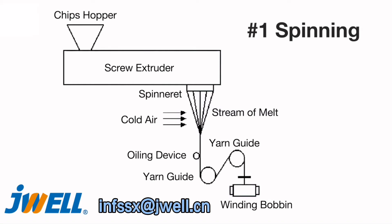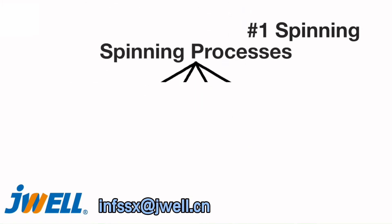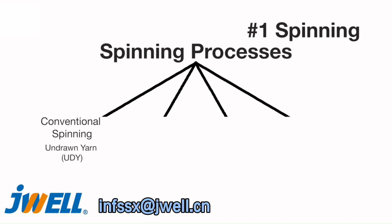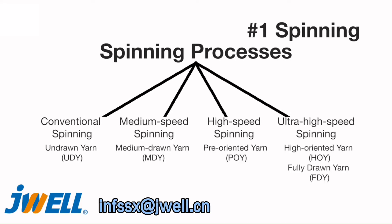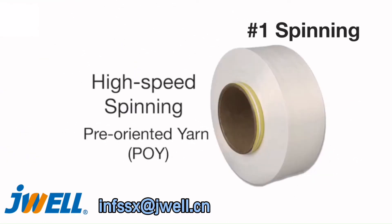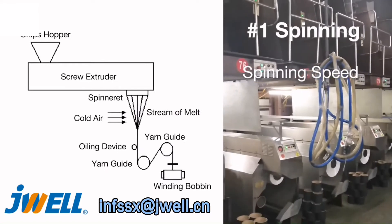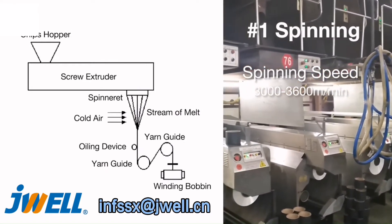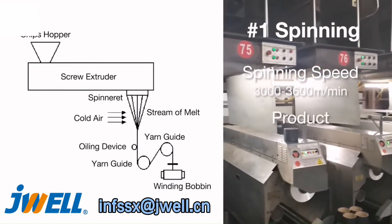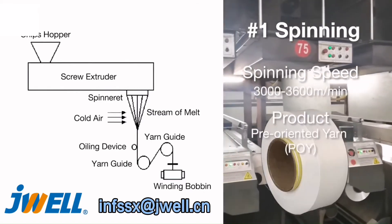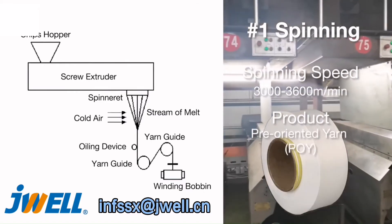According to spinning speed, the spinning process can be divided into conventional spinning, medium speed spinning, high speed spinning, and ultra high speed spinning. We will use high speed spinning, the most commonly used process for the production of textured yarns, to illustrate the spinning process. The spinning speed of high speed spinning is 3000 to 3600 meters per minute, and the product after this process is pre-oriented yarn, POY.